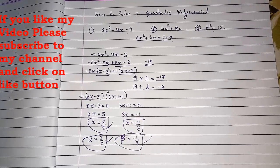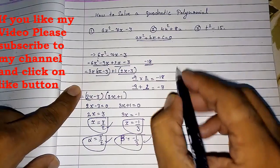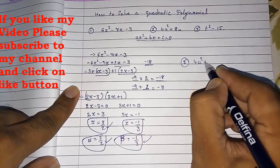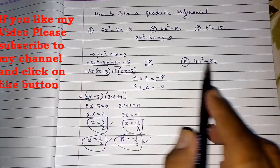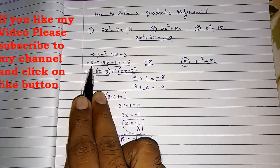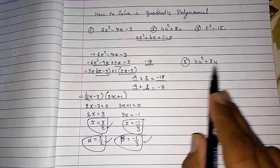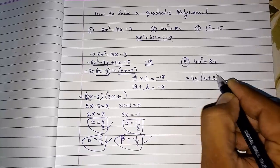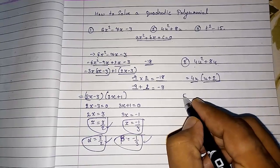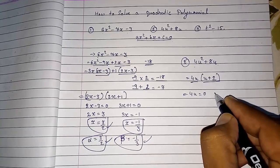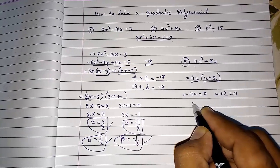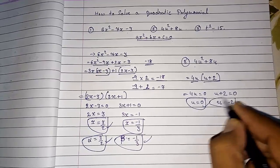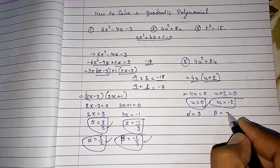Now for the second example, 4u² + 8u. Here only two terms are present, so instead of splitting the middle term we directly take 4u common: 4u(u + 2) = 0. So u = 0/4 = 0, and u = -2. Therefore α = 0 and β = -2.